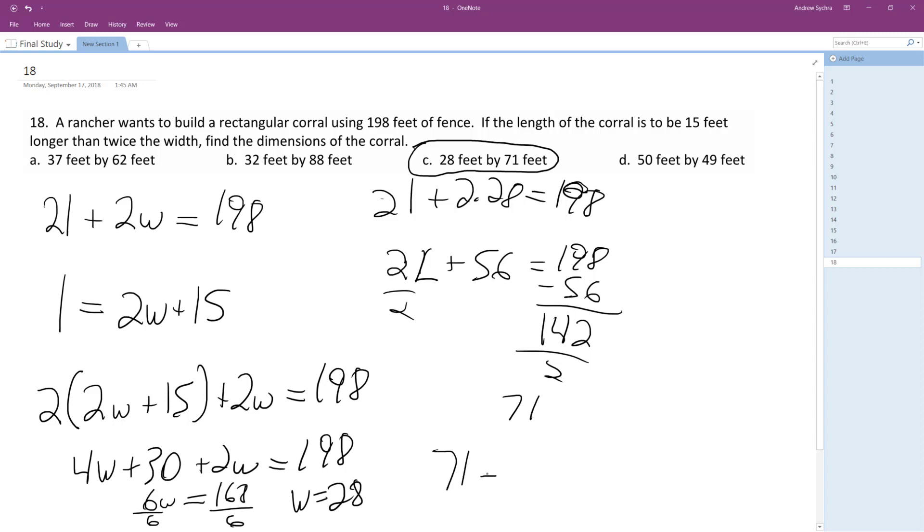So 71 is equal to twice 28 plus 15. So 56 plus 15 gives us 1, carry the 1, 5 plus 1, 6 plus 1, 7. Yep, that checks out. So answer is C, 28 feet by 71 feet.